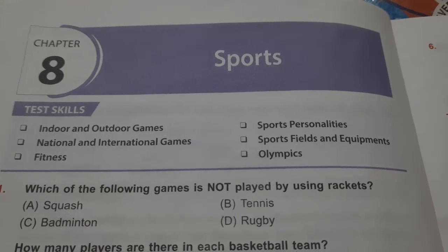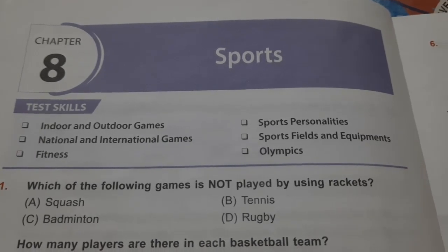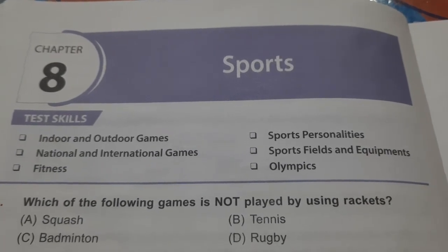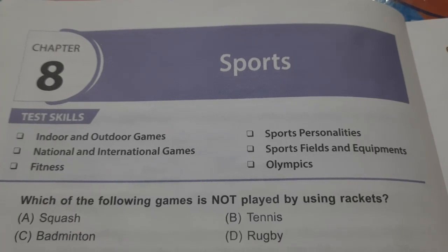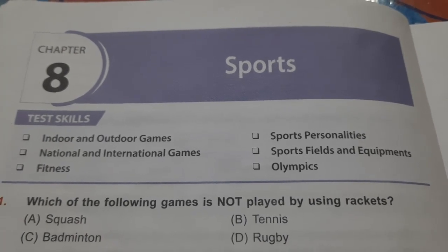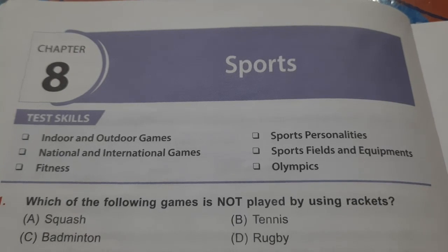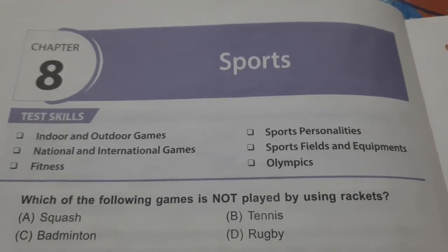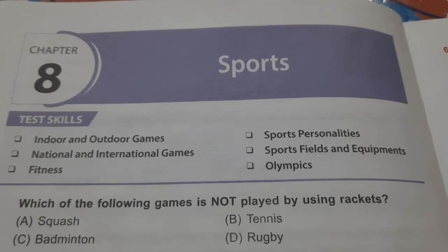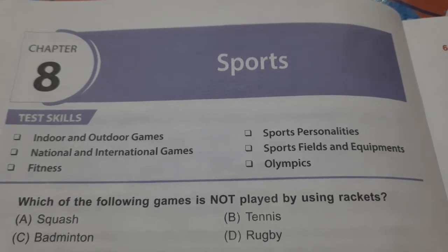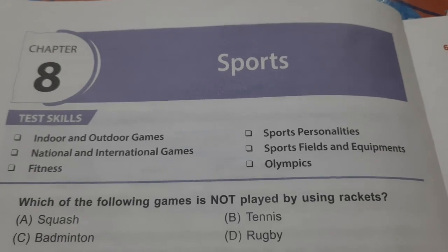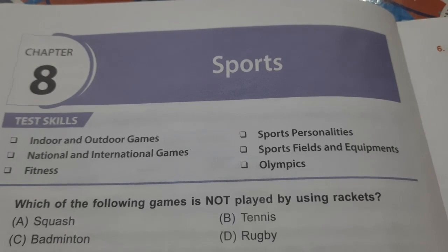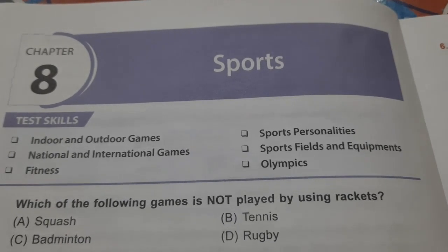Fitness — how to be fit, what all things to eat. Olympics — games which are played at international level. Bohut sare types ke games usme khele jata hai, almost every kind of game, and they are taken up from various parts of the world. Participants also come and play from various parts of the world, and it is conducted every four years.